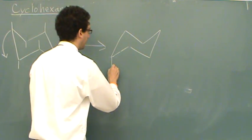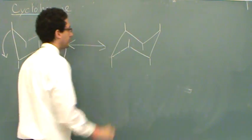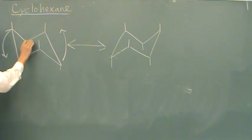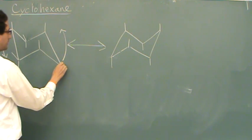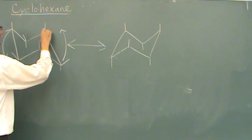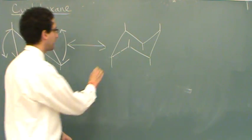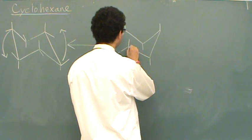And then you do the same here. At this point go down, up, down, up, down, up, down, up. And those are all the axial positions. For the equatorial positions, you want to draw away from the center point and parallel to the two lines away. So these two — this one would be that way, this one would be this way, this way, this way, and finally that way. And you can do the same here: away from the center and parallel to the lines that are two lines away.